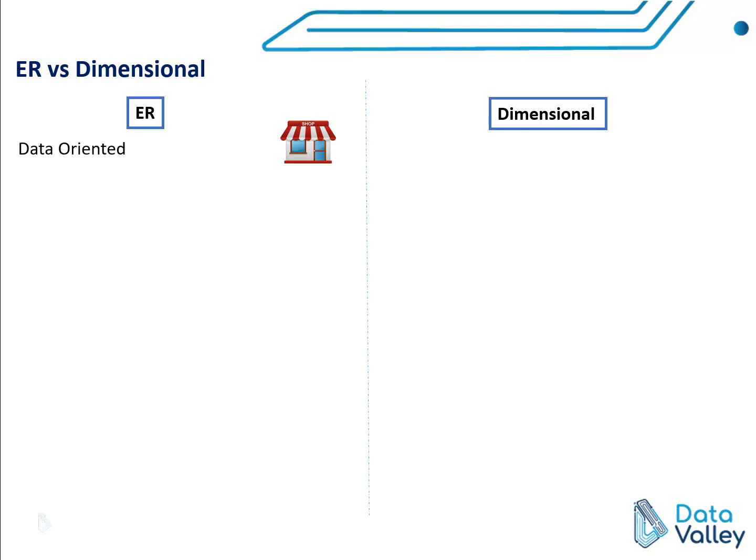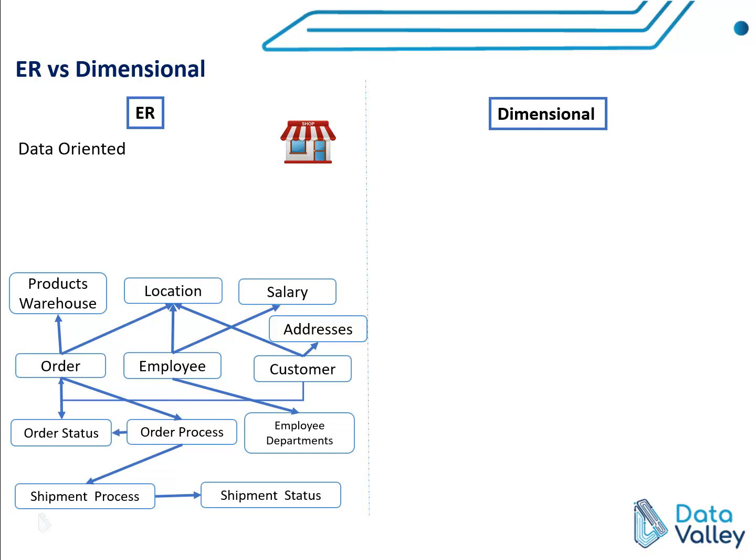In ER modeling the basic unit of designing is data. If we are going to design a data model for a retail shop, the starting point is to ask what are the available data sets. For a retail shop we can have a data set for employee, employee departments, orders, order status, order process, and data sets to describe the shipment process and shipment status.